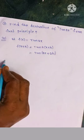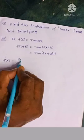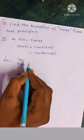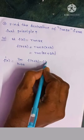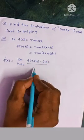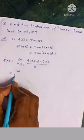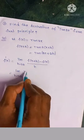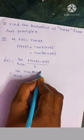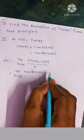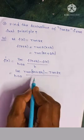From the first principle, f dash of x is equal to limit h tends to 0, f of x plus h minus f of x, whole by h. This is the first principle. So, limit h tends to 0, f of x plus h means tan 2x plus 2h, minus tan 2x, whole by h.